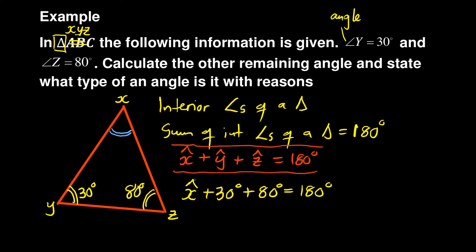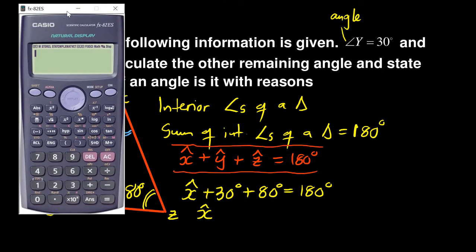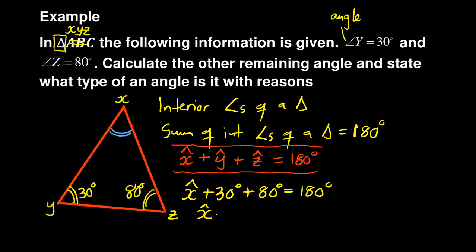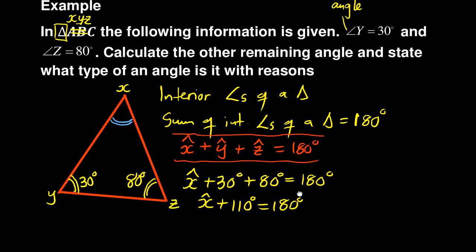...180 degrees. Now the next thing you need to do is solve for X. You have angle X - now you can solve and add on the left hand side: 80 plus 30, which is 110. So that's 110 equals 180.